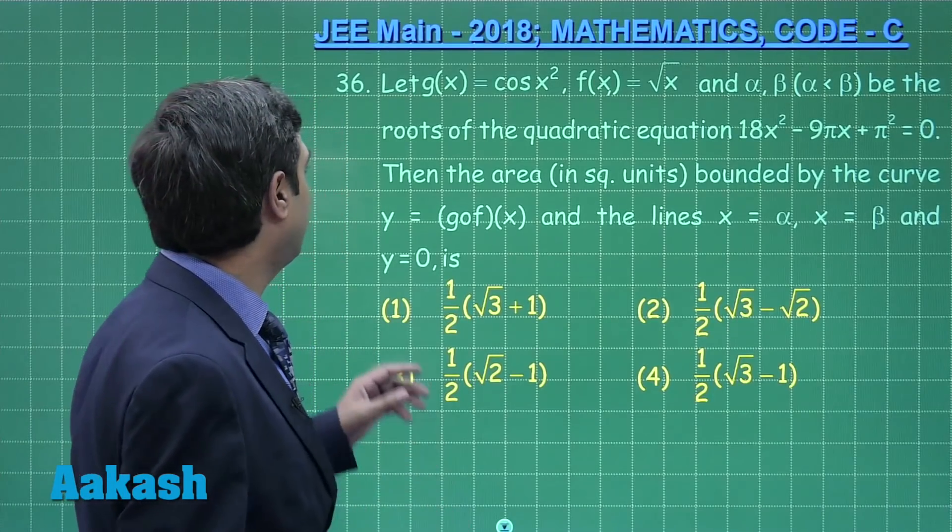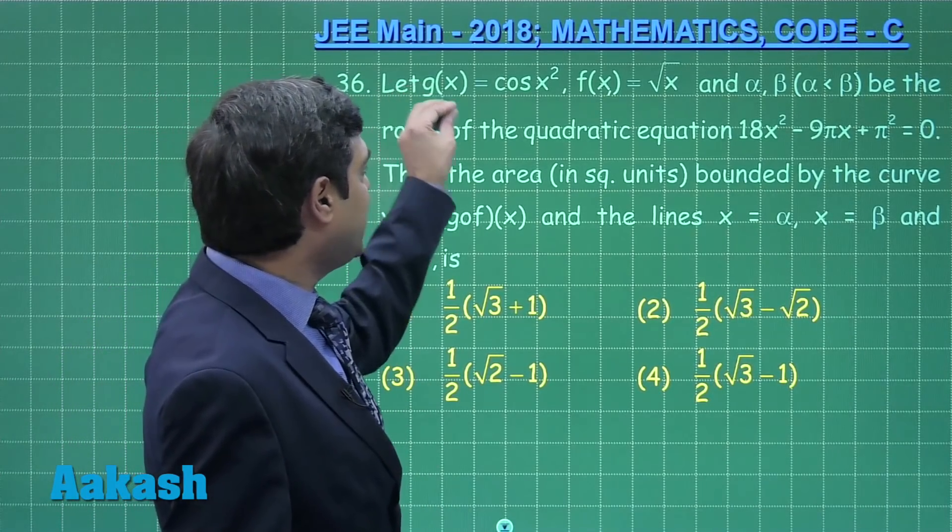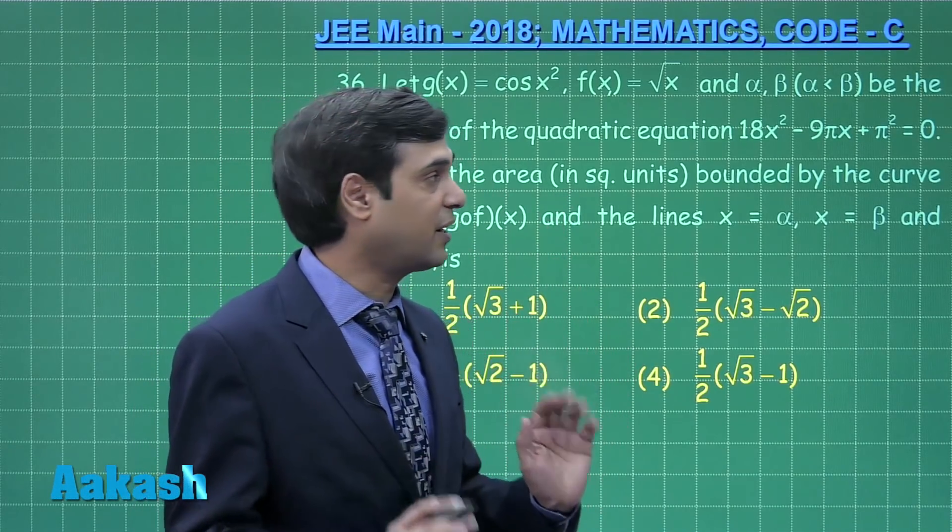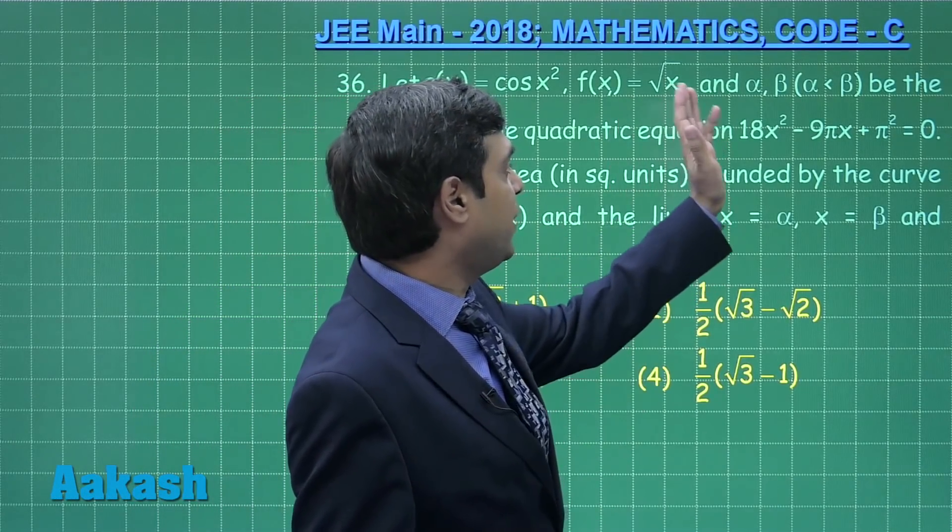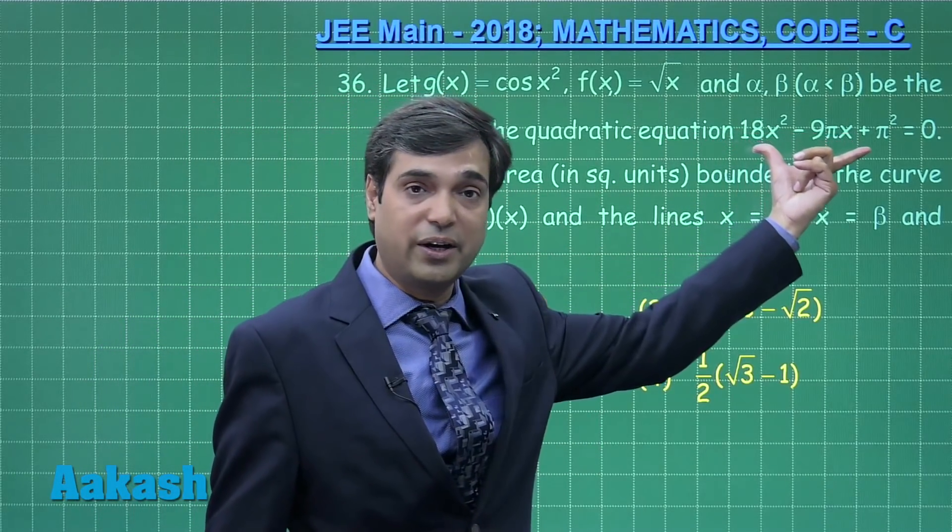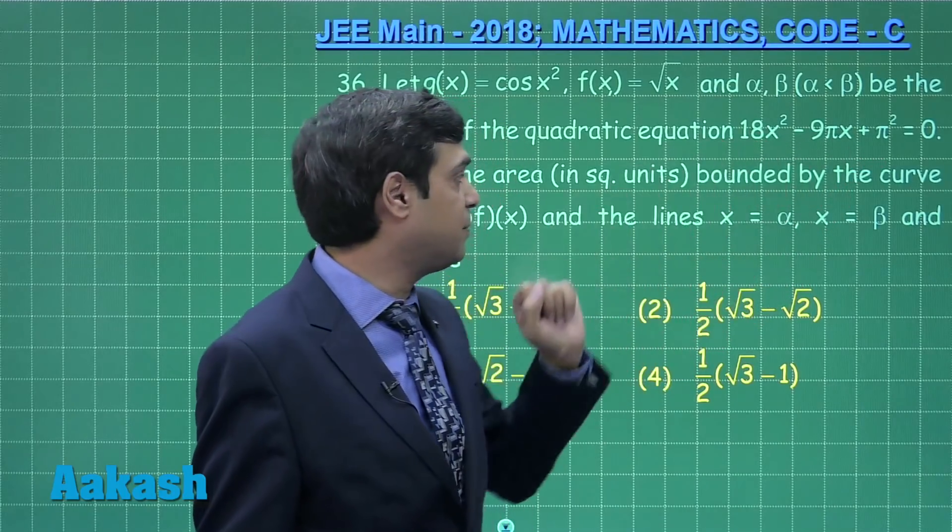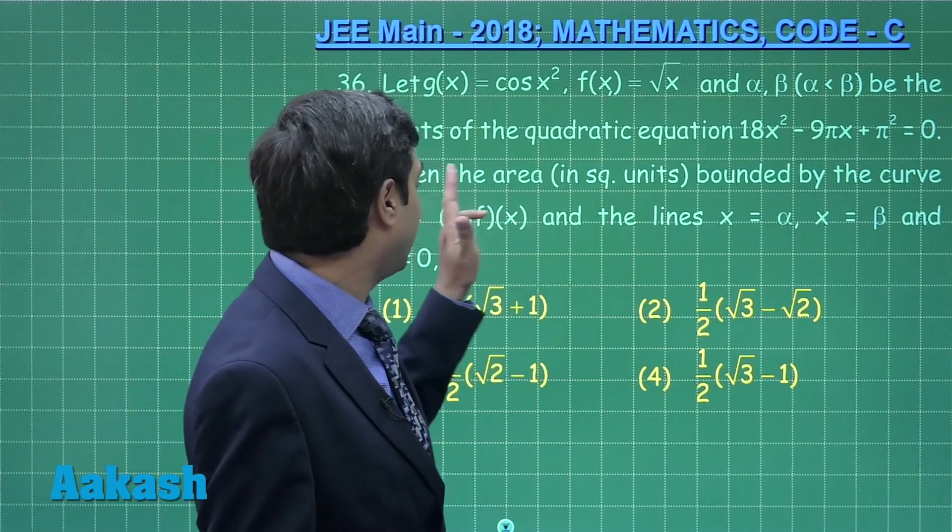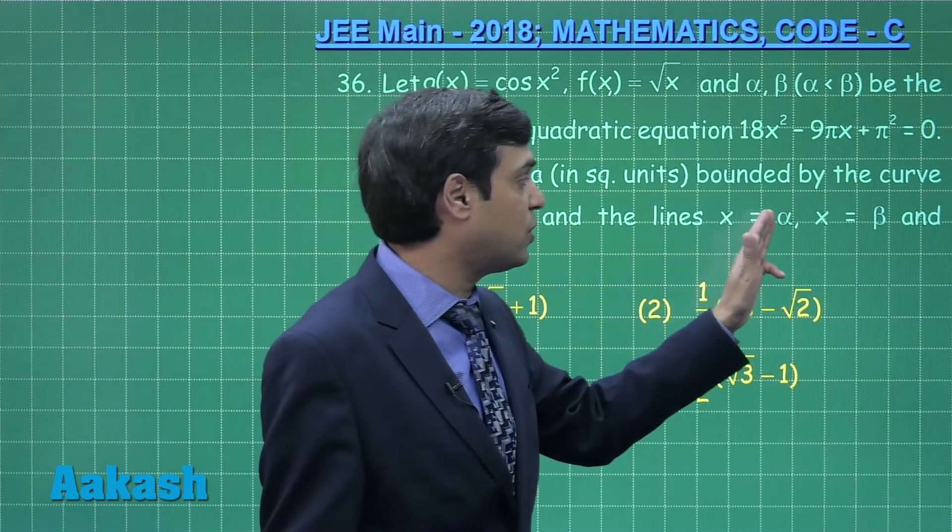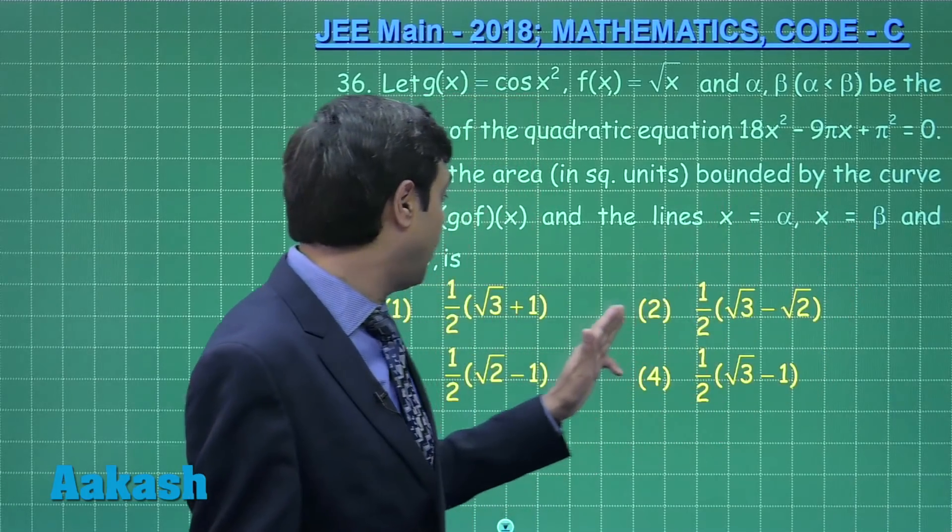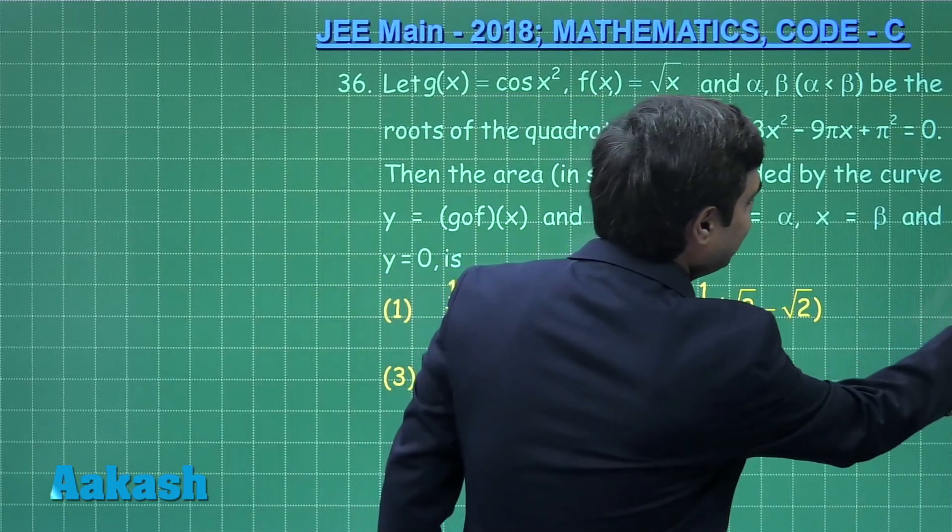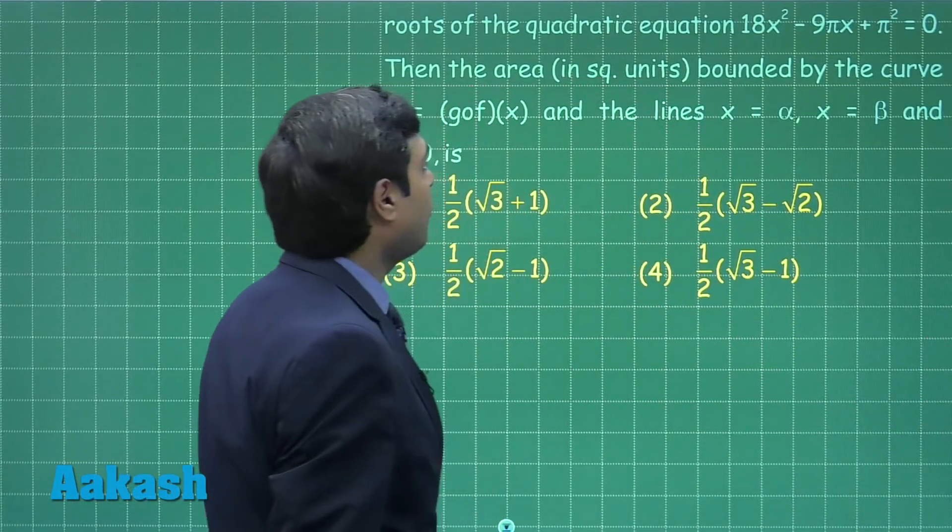Let us take next one, that is question number 36. Let g(x) equals cos x square and f(x) equals root x. Two functions are given. Alpha, beta, where alpha is less than beta, be the roots of the quadratic equation. One quadratic is given whose roots are alpha and beta. Then the area bounded by the curve y equals g of f(x) and the lines x equals alpha, x equals beta, and y equals 0 is. Pretty simple one if we consider the function g of f(x).